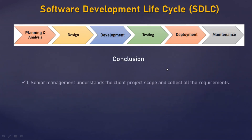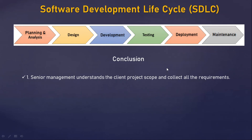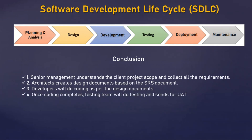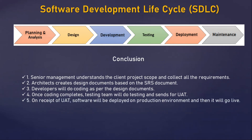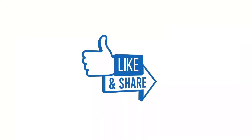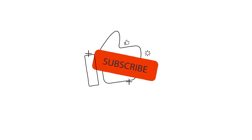In conclusion: Senior management understands the client project scope and collects all requirements. Design documents are created based on those requirements. Coding is done as per the design documents. Once coding is complete, the testing team performs testing and sends for UAT. Upon receipt of UAT approval, the software is deployed to production and goes live. After successful deployment, the operations team handles maintenance activities.